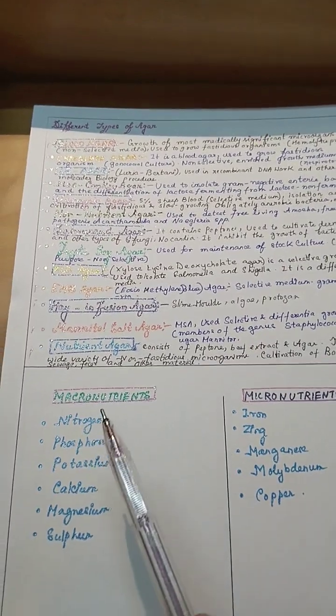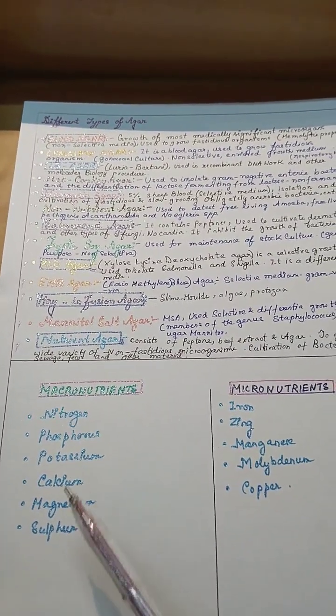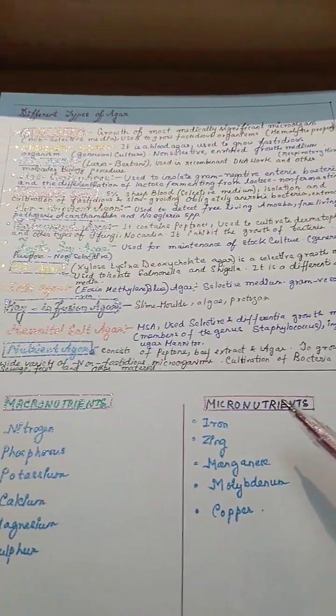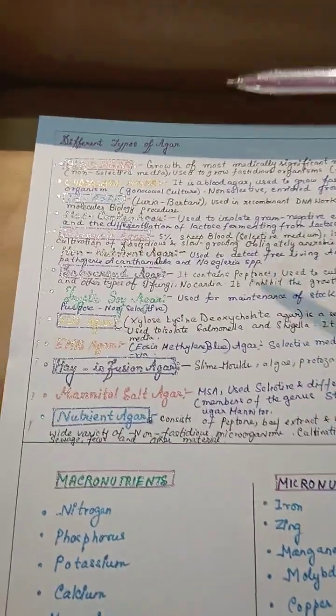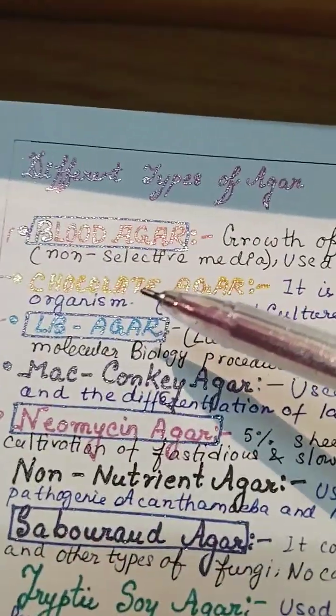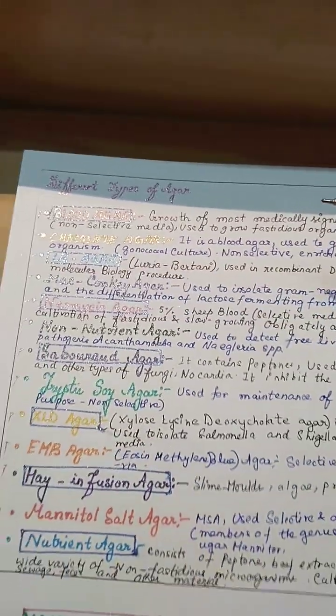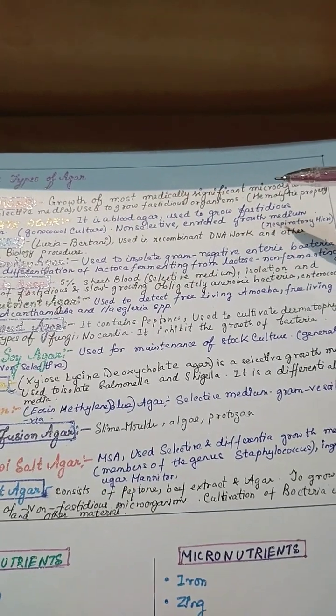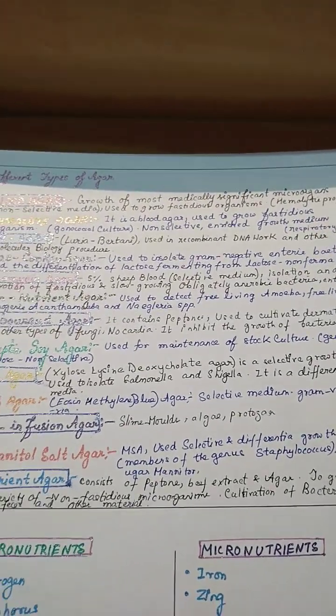Here are some macronutrients and the list of micronutrients which can be enriched with this agar. For example, blood agar is used for the growth of medically significant microorganisms to check their hemolytic property.